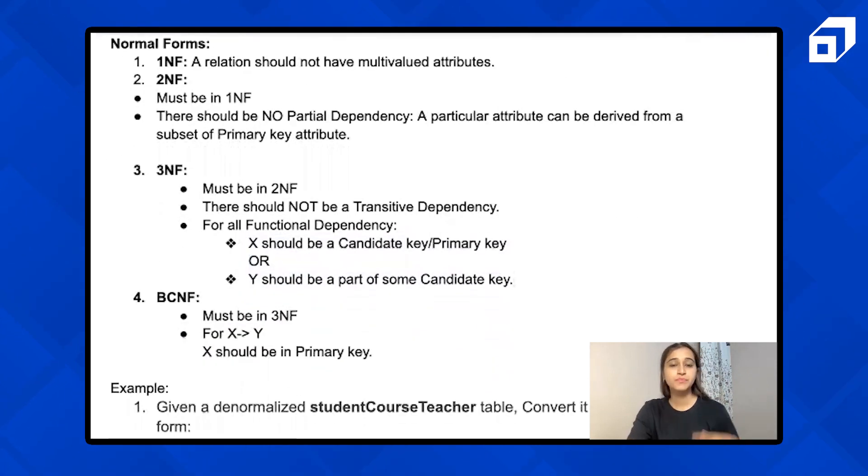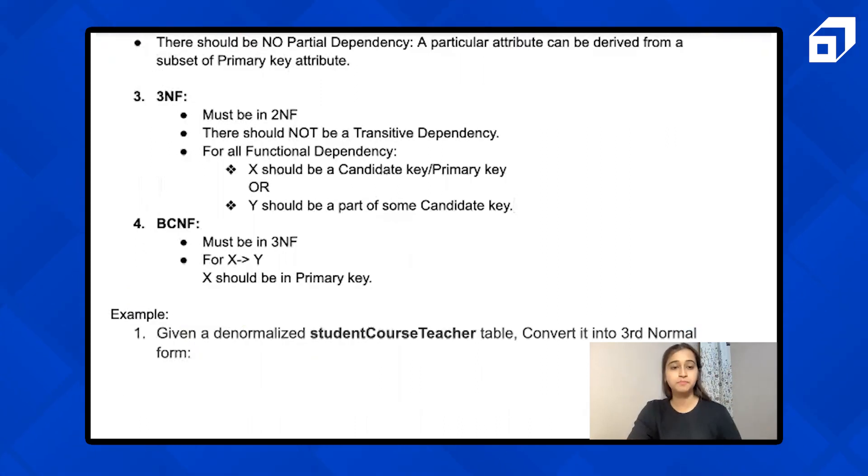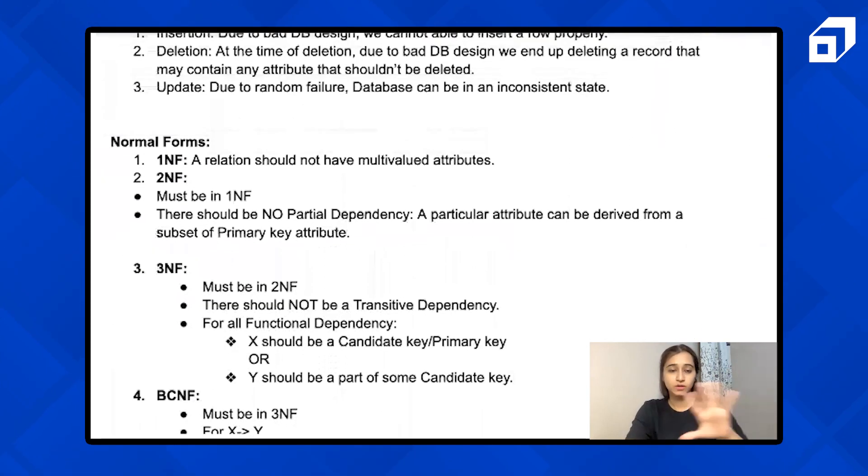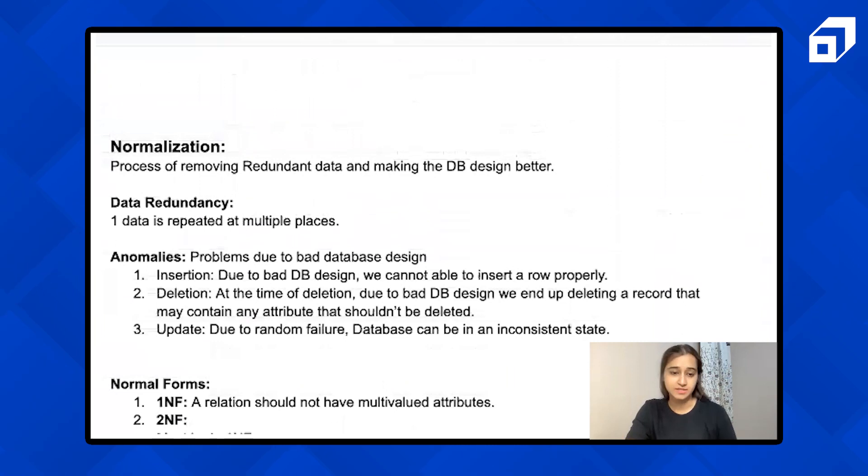Now BCNF. It's a stricter form, stronger form of 3NF. It says that for X to Y, X should be in primary key. That's it. Now these are all the normal forms and about all the normalization.